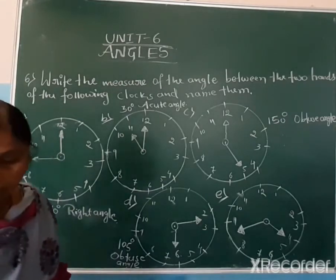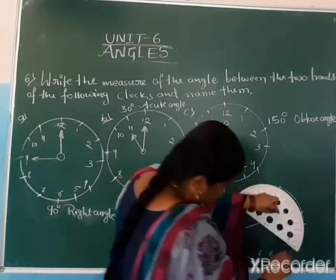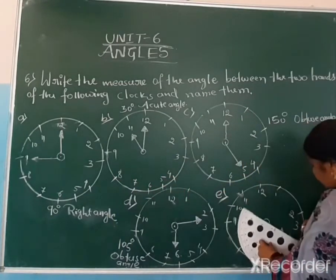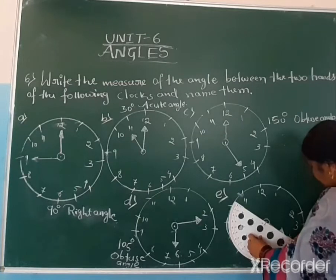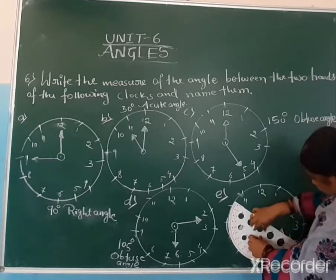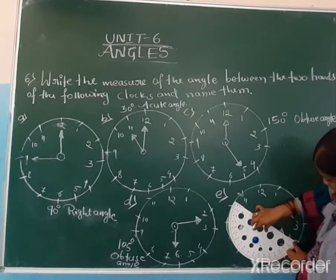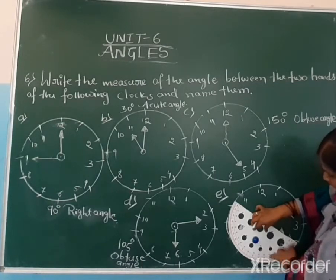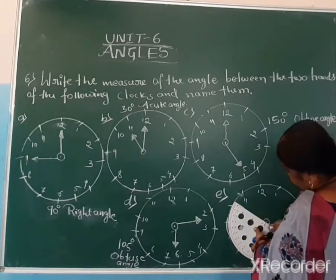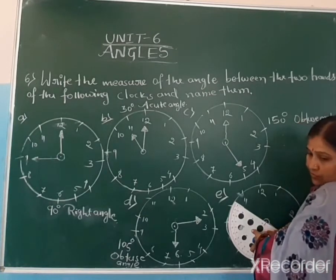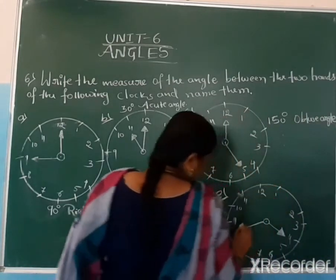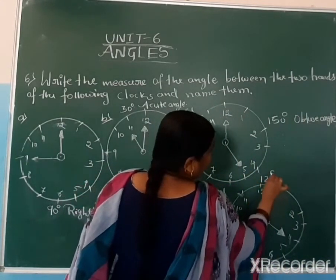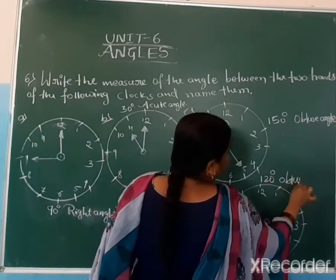Now the last one, clock E. One of the hands we keep to the base. Starting from 0 on the outer side: 10, 20, 30, 40, 50, 60, 70. Where it crosses — 120 degrees. This is also an obtuse angle.